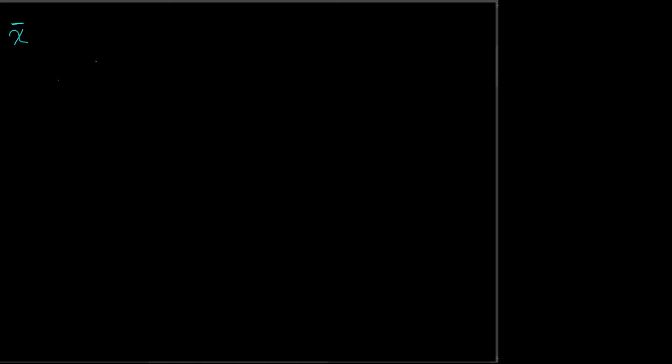I kind of hinted at it already when I was going over formulas — that we had a variable that represents the average of all my x's. We can take the sum of all my x's and divide it by the number of x's. This is finding the mean, or the average — but mean will be the word we use.